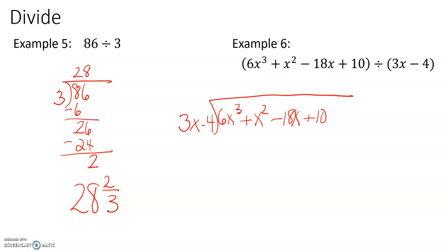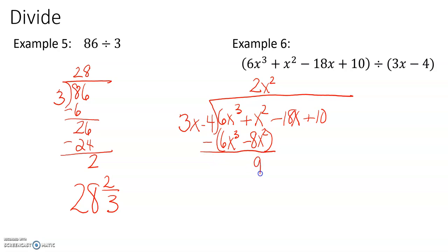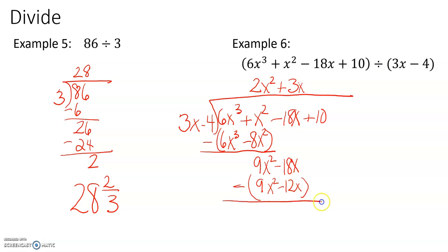3x times what is going to give us 6x cubed? 3 times 2 gives us the 6, and x times x squared gives us the x cubed. So 2x squared times 3x is 6x cubed, minus 2x squared times 4 is 8x squared. Carefully subtract: 2x squared minus 8x squared gives 9x squared minus 18x. 3x times what gives us 9x squared? That's plus 3x. Carefully multiply: 9x squared minus 12x.